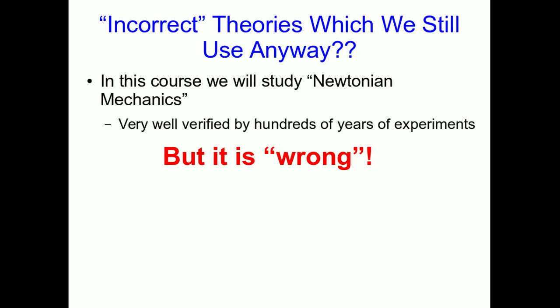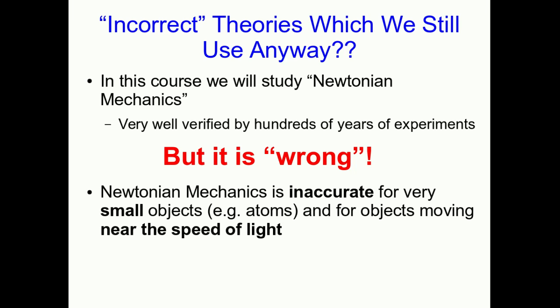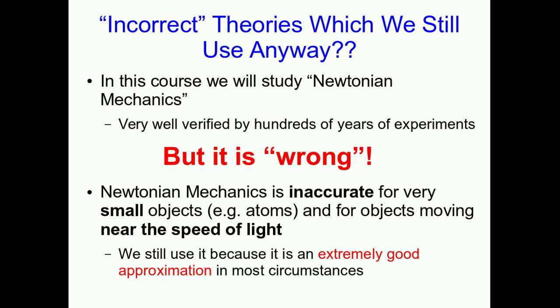Well, Newtonian mechanics turns out to be inaccurate, either for very small objects like atoms, or for objects moving near the speed of light. But notice, a lot of the time we're not dealing with those situations. And as long as we're not dealing with those situations, Newtonian mechanics is an extremely good approximation. And it's a lot easier to use than the other theories that do work for small objects or things moving near the speed of light. And so we continue to use Newtonian mechanics, even though it's wrong.